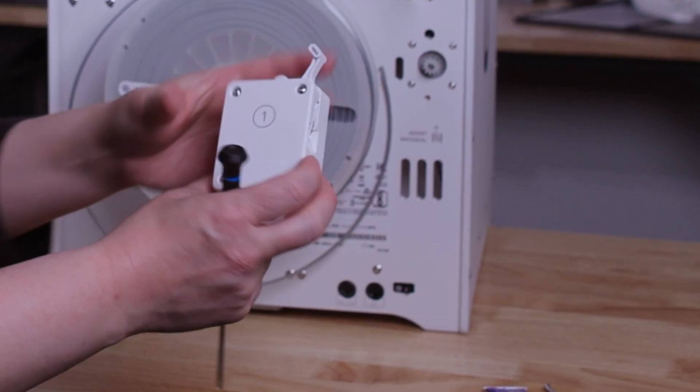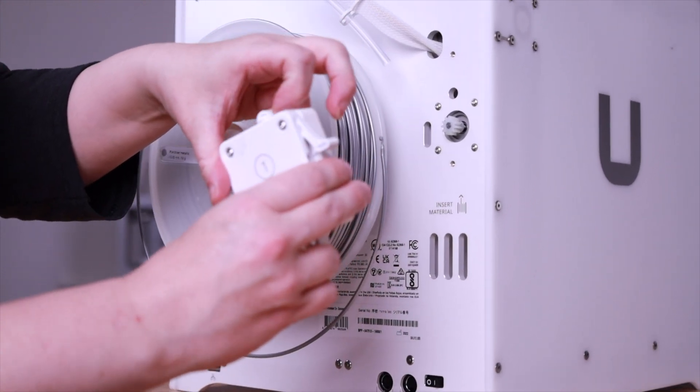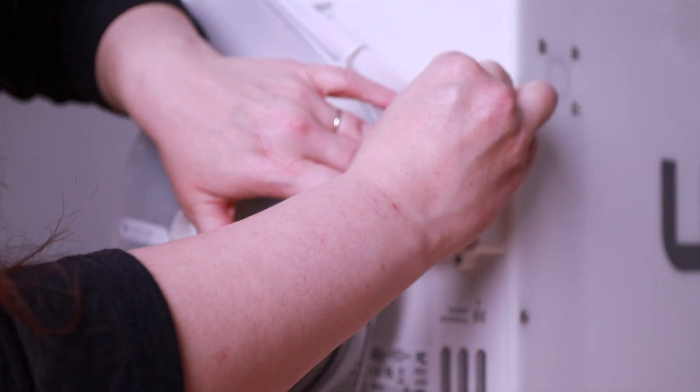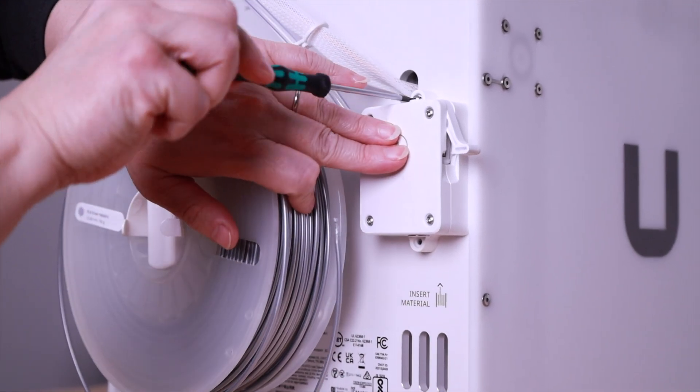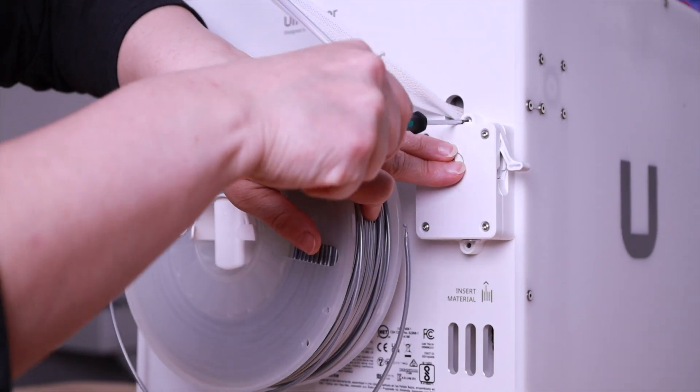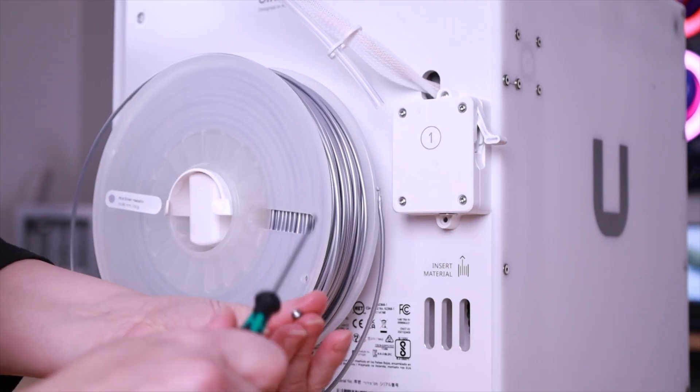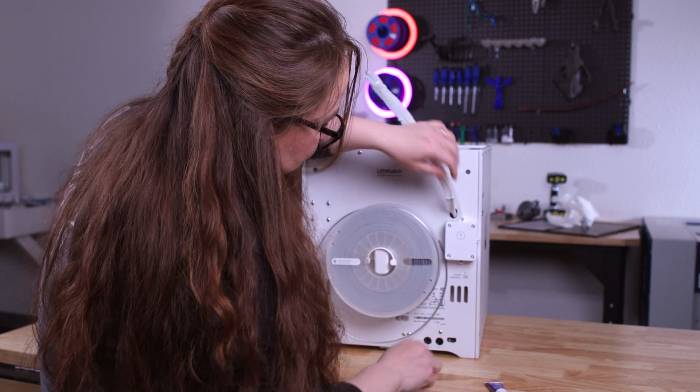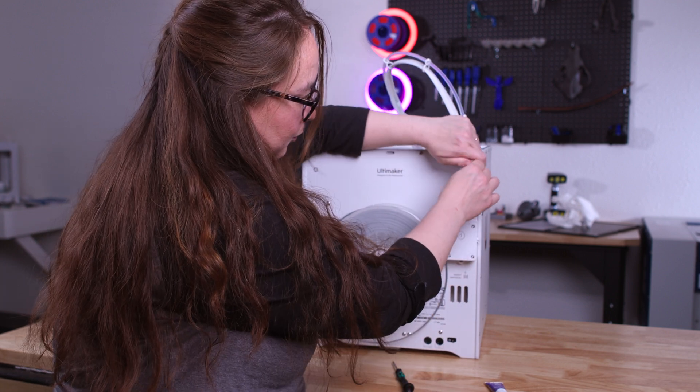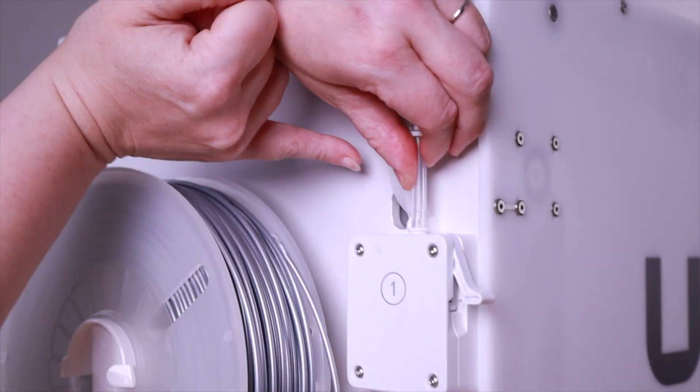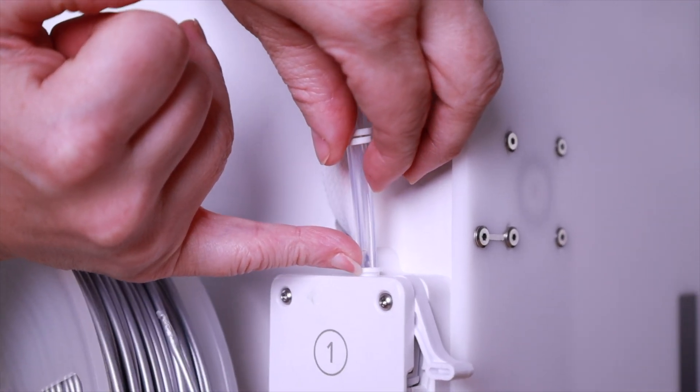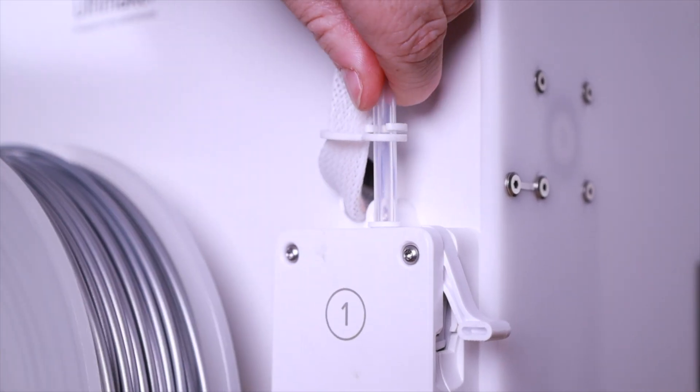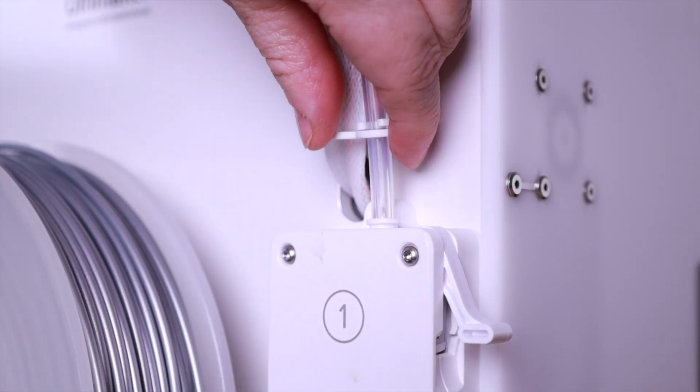Once you got all that done then you can close it and you can put it back on. You screw it back on and you put everything back into place. And then you can load your material and you should be able to be ready to print. So when you put the Bowden tube back in you want to lift up the coupling a little bit so it goes all the way in. You want that Bowden tube to go all the way down and then you put that Bowden tube clip on that coupling so it doesn't go anywhere.